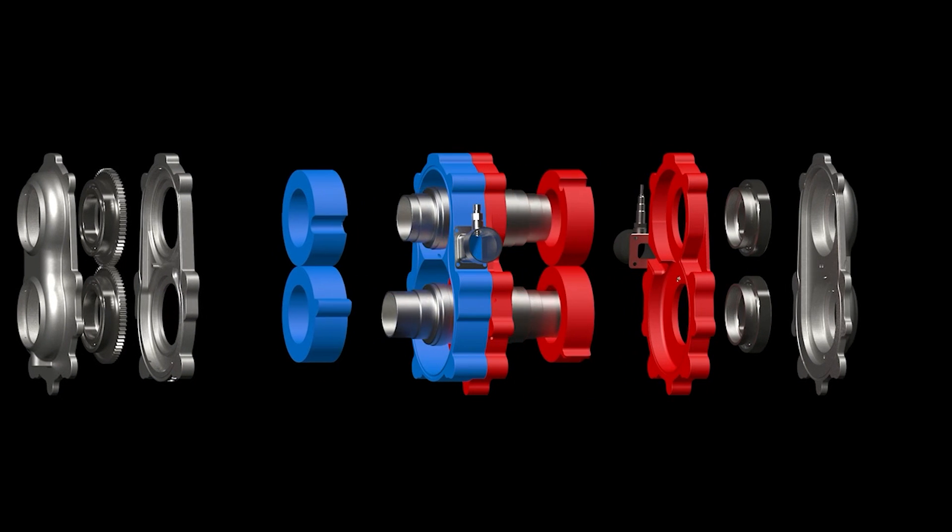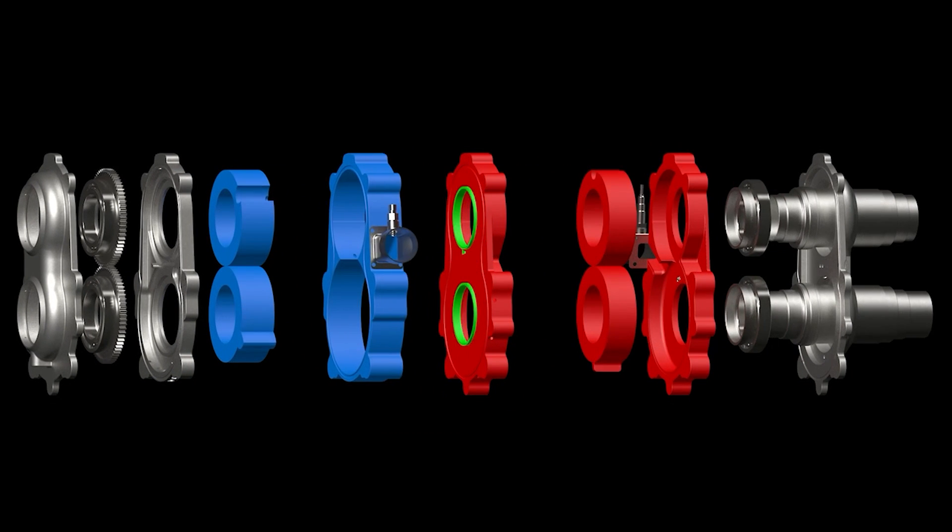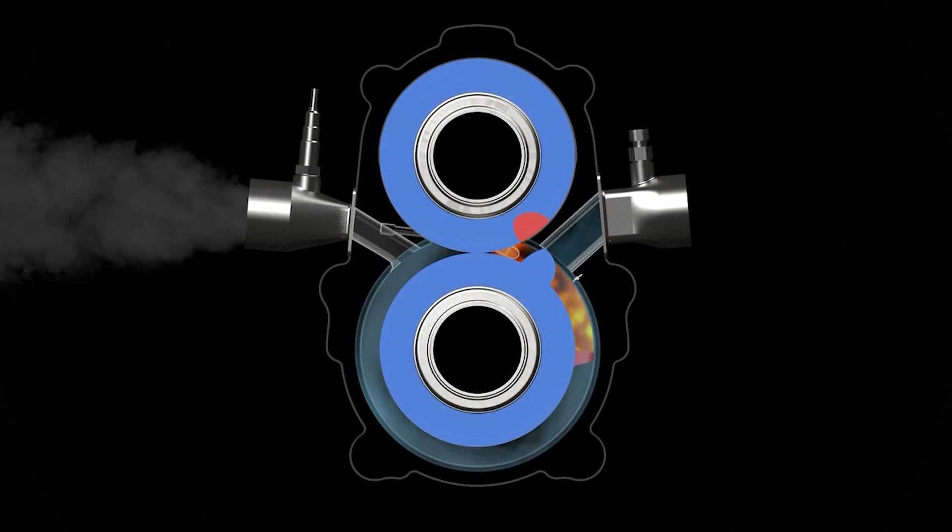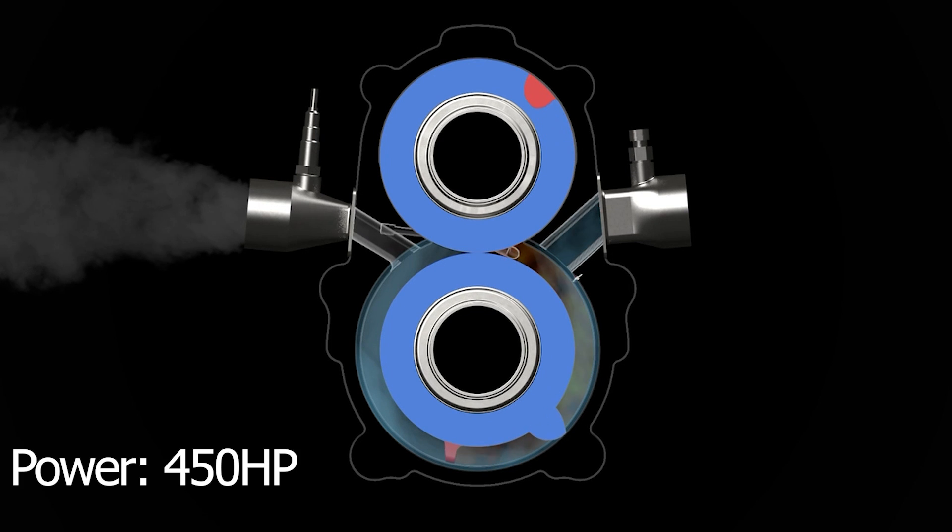So how much power? Well according to the information they sent me their gen 4.5 Omega-1 engine will produce 450 horsepower. Now 450 horsepower from an engine that only weighs 54 kilograms is really impressive.